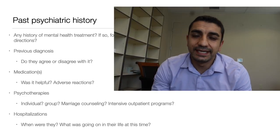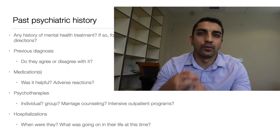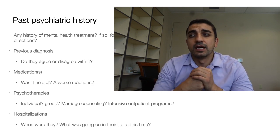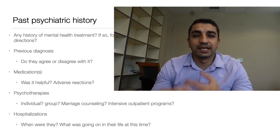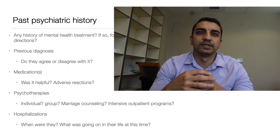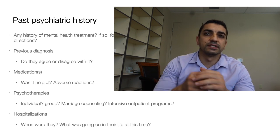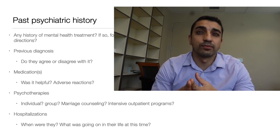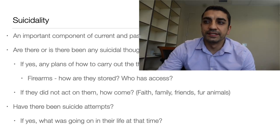History tends to repeat itself, and psychiatric history is no different. It's important to know what sorts of treatments the patient has had in the past — have they ever been diagnosed with anything, do they agree with the diagnosis, were they on medications and were those helpful or did they have bad reactions? Have they been in therapy — individual, group, marriage counseling, or more intensive programs like intensive outpatient? Also, any psychiatric hospitalizations: how many, when, and what was going on at that time?